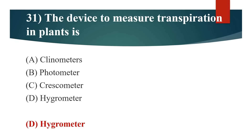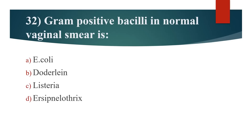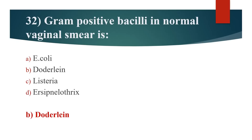32nd question: Gram-positive bacilli in normal vaginal smear is? Option A: E. coli. Option B: Doderlein's bacillus. Option C: Listeria. Option D: Hercipenalothrix. Answer is Option B: Doderlein's bacillus.